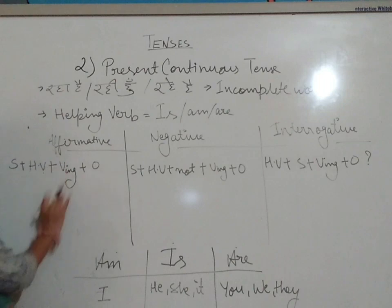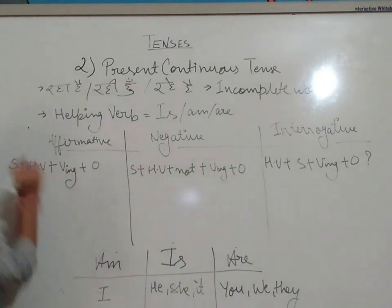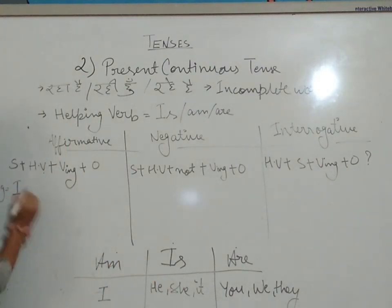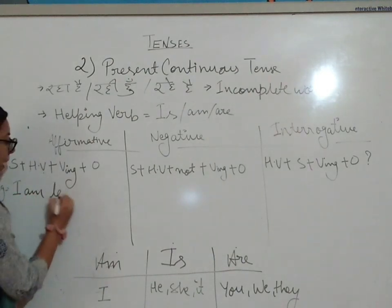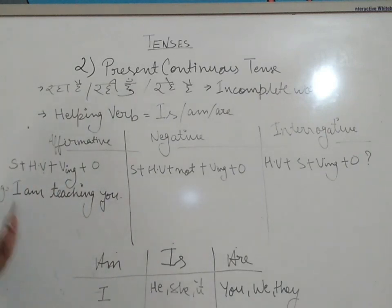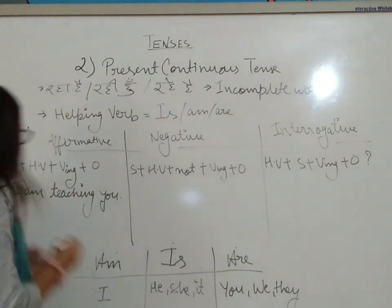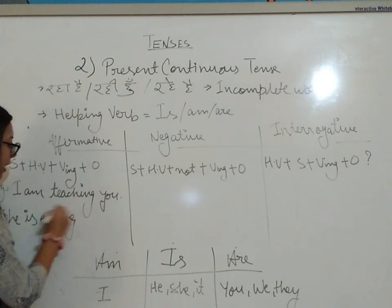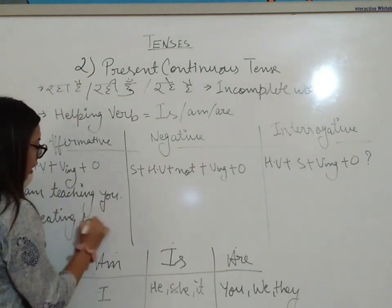Let's see an example: 'I am teaching you.' I + am + teach + ing = I am teaching you. What is our object? 'You.' So the full sentence is 'I am teaching you.' For singular example: 'She is eating food.' She is singular, so we use 'is.'